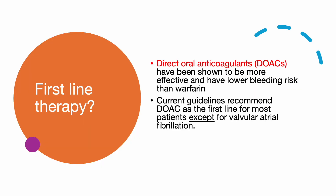Direct oral anticoagulants, also known as DOACs, have been shown to be more effective and have lower bleeding risk than warfarin, and current guidelines recommend DOACs as the first line for most patients. There is emerging evidence comparing one DOAC to another, but for now guidelines do not recommend one over the other. Current guidelines recommend DOACs as first line for most patients except for valvular atrial fibrillation.